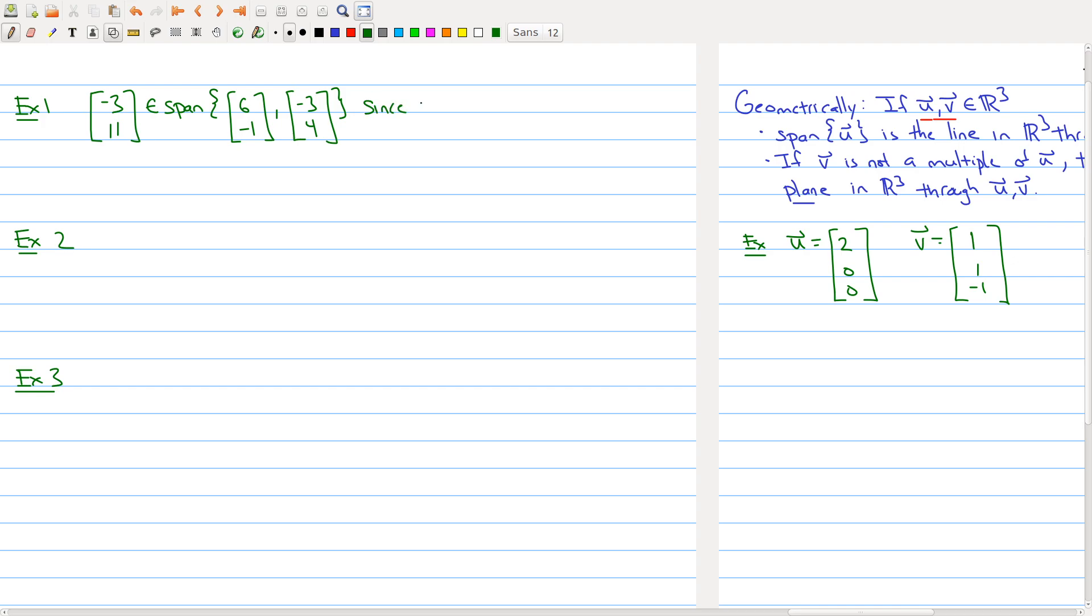We actually showed this earlier: we can write minus 3, 11 as a linear combination of these two vectors. One times the first vector plus three times the second vector gives us minus 3, 11. Since the span of these two vectors contains all linear combinations, it will contain the vector minus 3, 11.